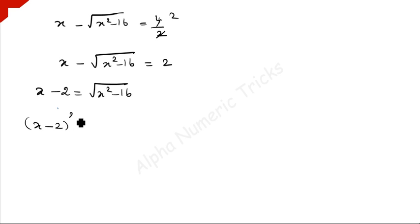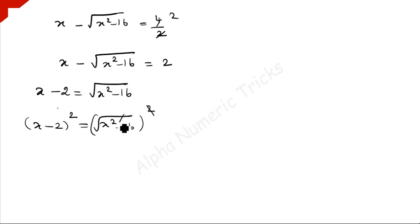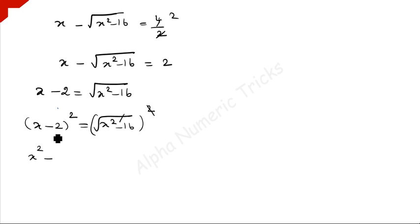So x minus 2 whole squared equals square root of x squared minus 16 whole squared — the square roots get cancelled. Applying the formula (a minus b) whole squared equals a squared minus 2ab plus b squared, we expand the left side: x squared minus 4x plus 4, equal to x squared minus 16.